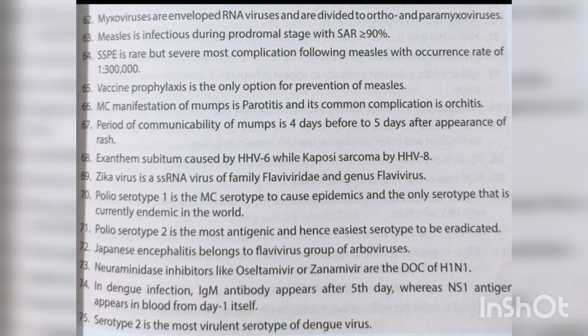Zika virus is a single-stranded RNA virus of family Flaviviridae, genus Flavivirus. Polio serotype 1 is the most common serotype to cause epidemics and the only serotype currently endemic worldwide; polio serotype 2 is the most antigenic and hence the easiest to eradicate. Japanese encephalitis belongs to the Flavivirus group of arboviruses. Neuraminidase inhibitors like Oseltamivir or Zanamivir are the drugs of choice for H1N1. In dengue infection, IgM antibody appears after day 5 whereas NS1 antigen appears from day 1; serotype 2 is the most virulent serotype of dengue virus.